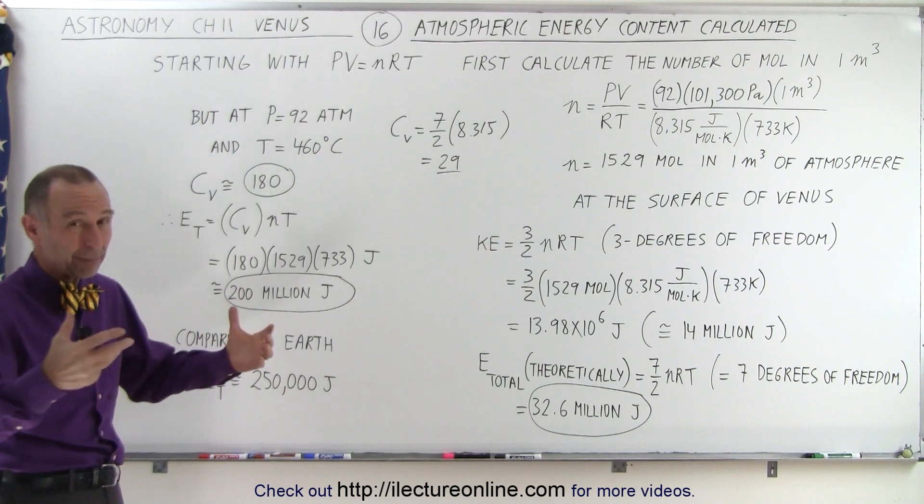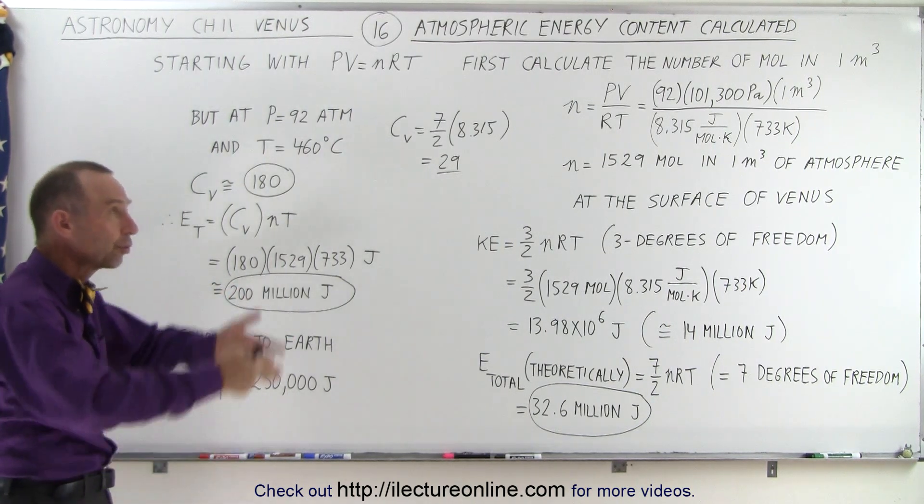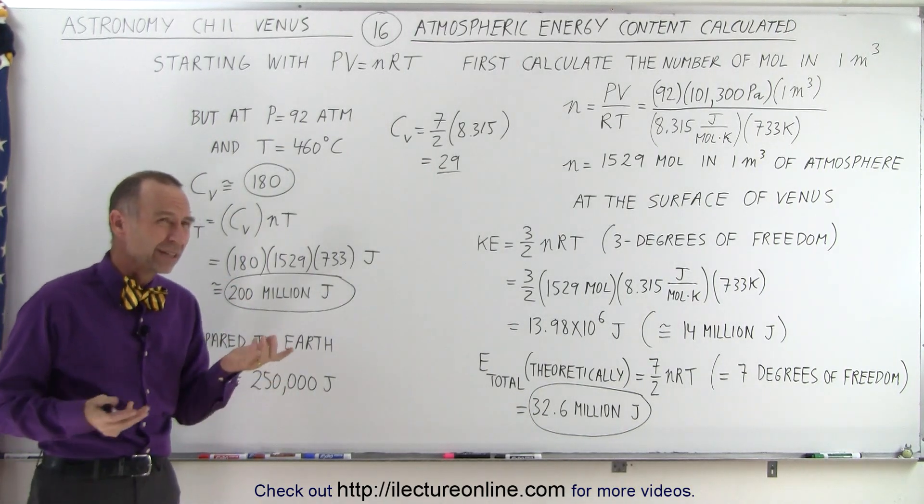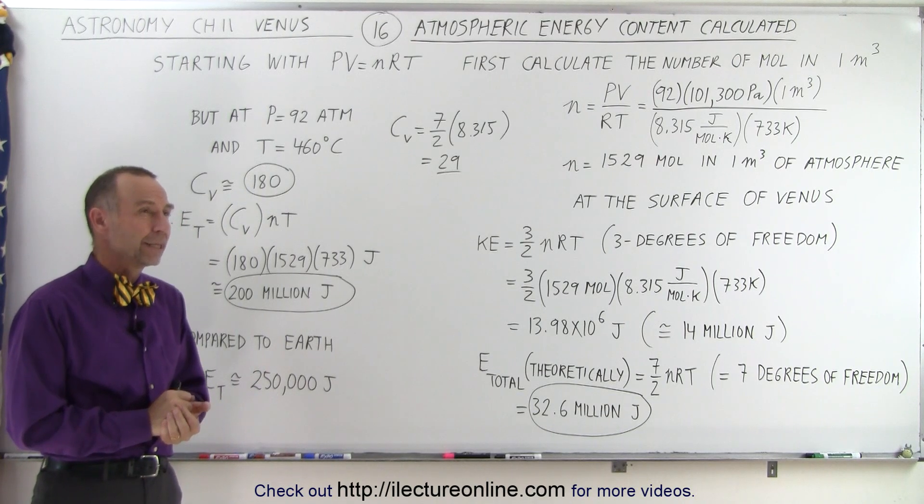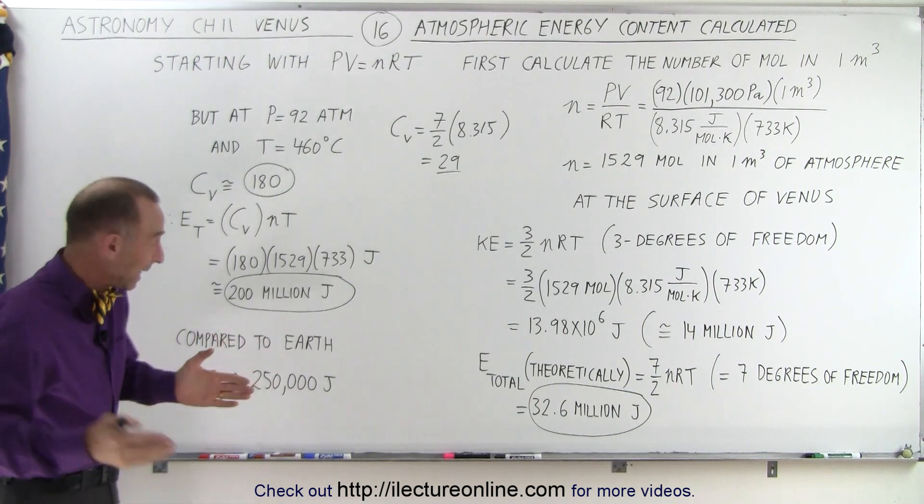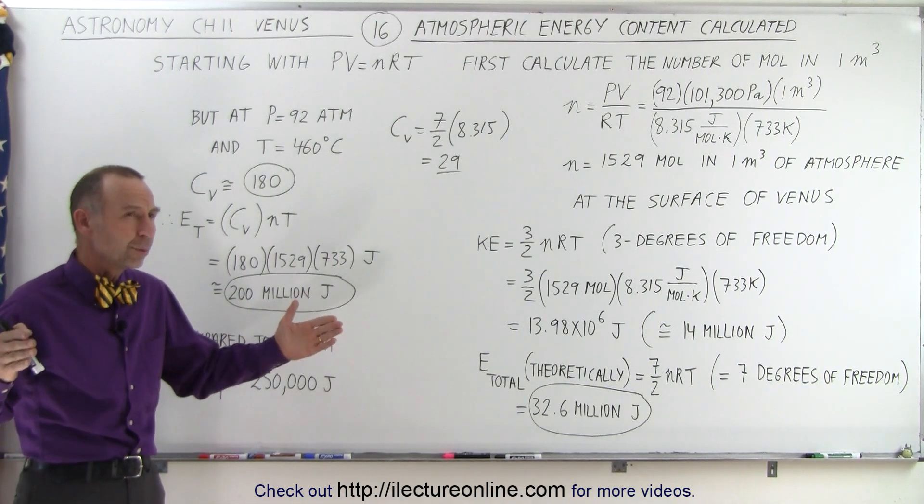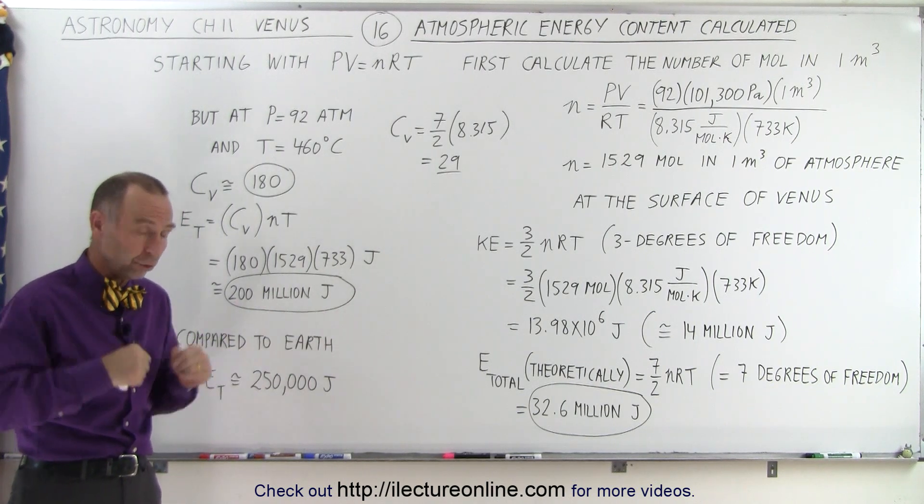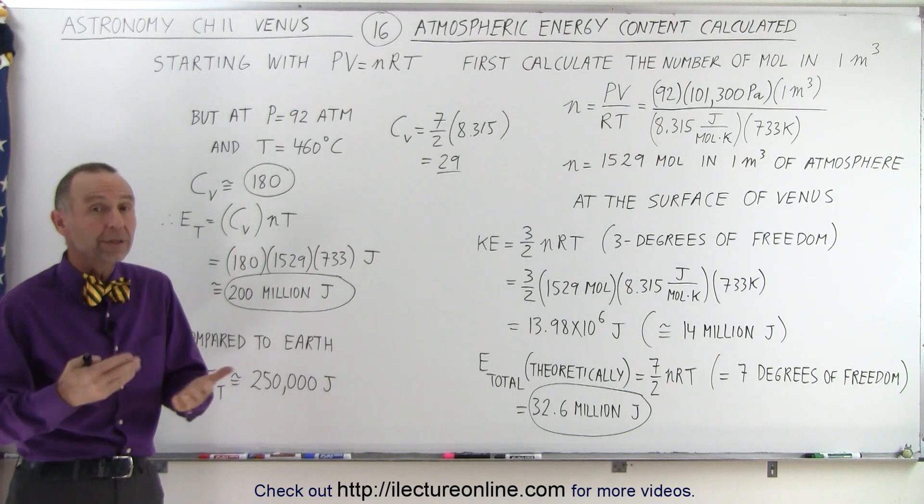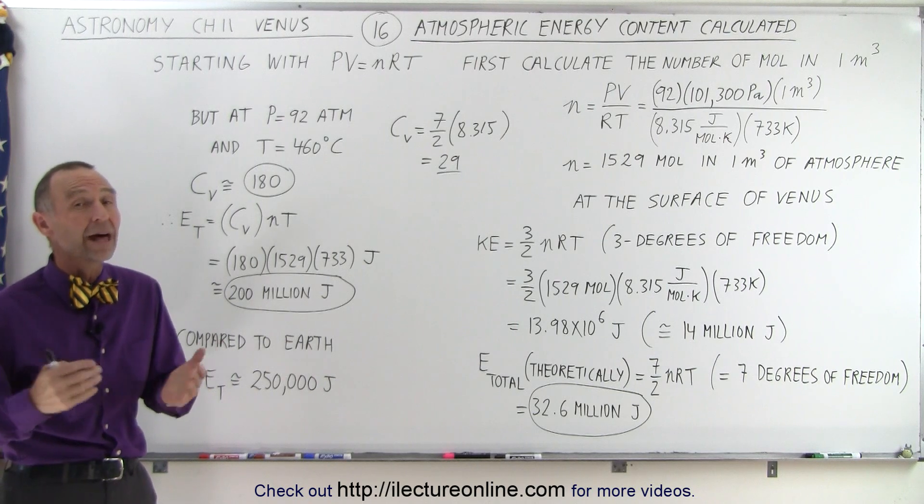So now we're going to extrapolate that over the entire surface of Venus, and then of course for the entire height of the atmosphere. But notice, that's an enormous amount of energy. To kind of put that in perspective, the amount of energy a typical household uses in electricity in a whole week is about 200 million joules. So one cubic meter of atmosphere on Venus, on the surface of Venus, contains as much energy as what a typical household uses in electricity for an entire week. Wow, that's a lot of energy.